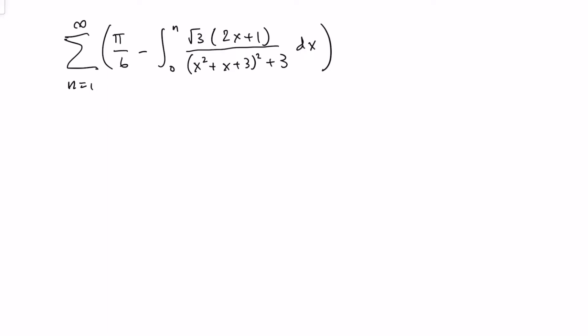It's asking us to find this infinite sum. At first glance, the thing you may think to do is to evaluate this integral first, and this integral actually isn't too difficult to evaluate, because notice the derivative of this quantity in parentheses is exactly equal to this. So by u-substitution, you'll get something like tangent inverse of that quantity over the square root of 3.